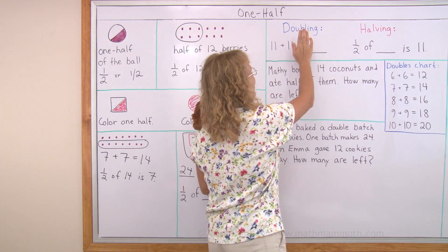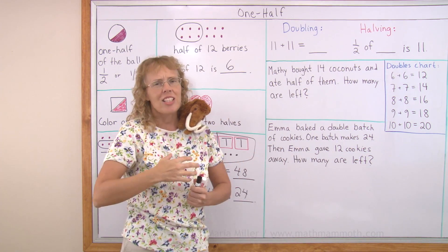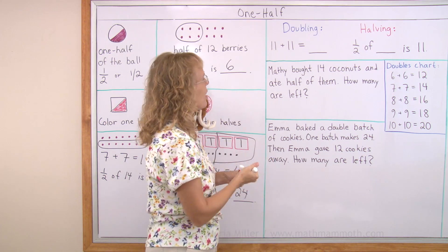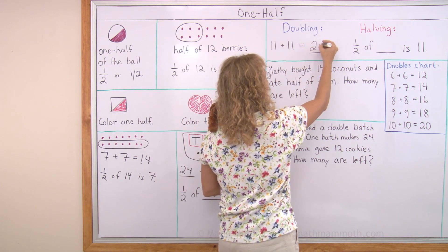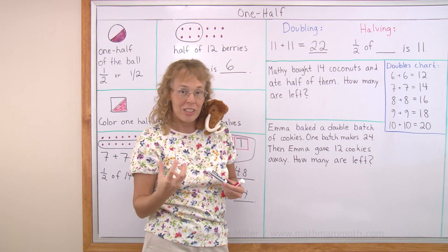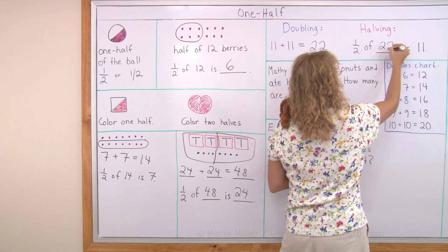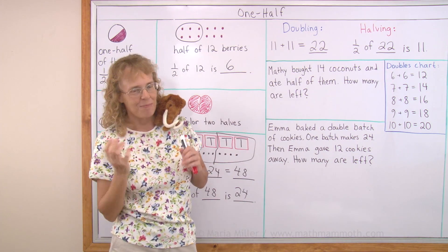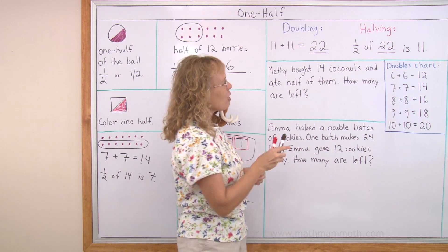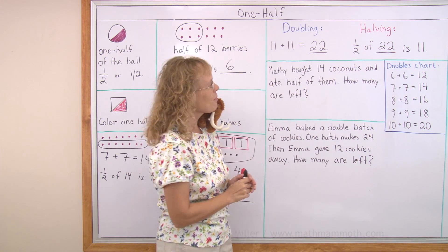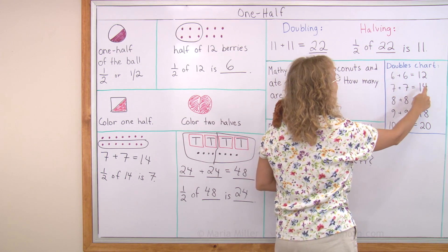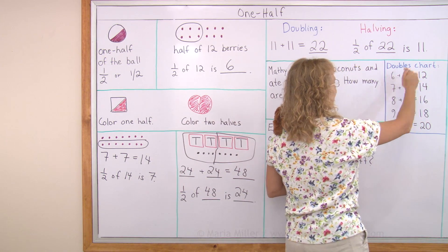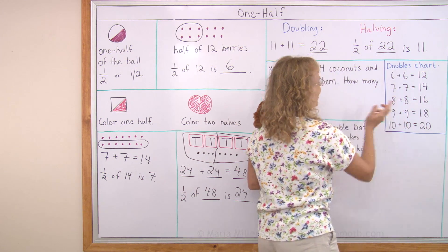So, like you already saw, doubling and halving sort of happen at the same time — they're actually opposites of each other. I have double eleven here: eleven plus eleven. Ten and one, ten and one, so I get two tens and two — twenty-two. And then I can take half of twenty-two and that will be eleven. Double eleven is twenty-two, and half of twenty-two is eleven. Doubling, halving. I also wrote a doubles chart here to help us. Double six is twelve, double seven is fourteen, and so on. But it is also, at the same time, a chart for halving — because half of twelve is six, half of fourteen is seven, half of sixteen is eight, and so on. So it works both ways.